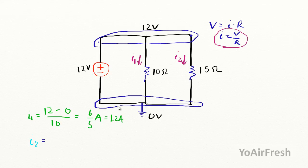So for I sub 2, it's going to be again 12 minus the drop. The drop over the 15 is going to lead us to this zero volt node here. So 12 minus 0 over 15 ohms gives us—well, I'll just do the decimal out right now.